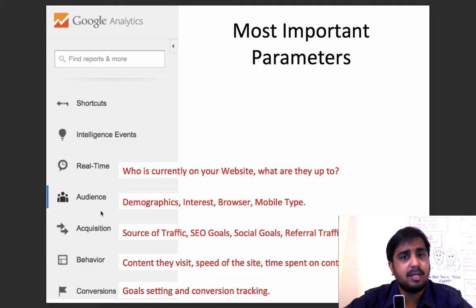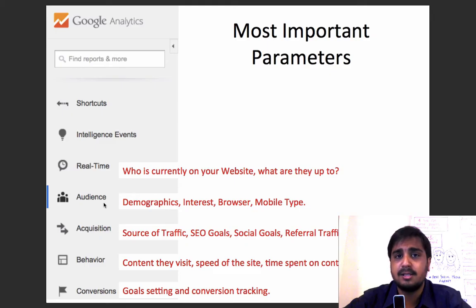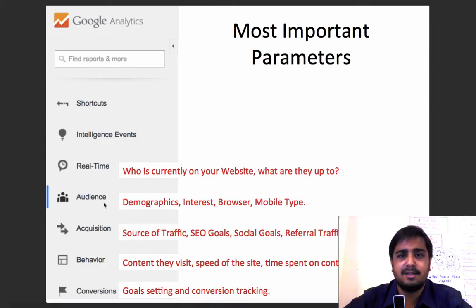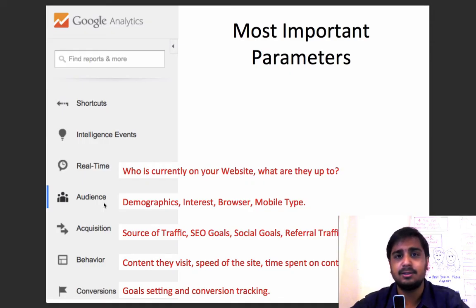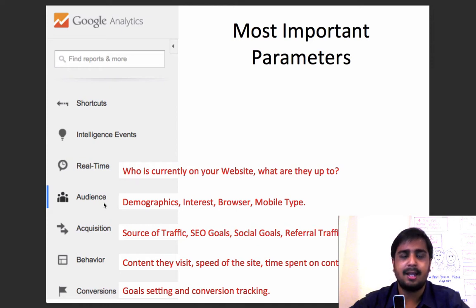The second parameter is the audience parameter, where you can discover the demographics of the audience, the interests of the audience, the browsers they use, and the mobile phones they use. You get a fair understanding of who your audience is and what their behaviors are on your website. Acquisition is about where your visitors are coming from — Google, direct, social networking sites, or different forums — so you understand how you acquire visitors and where they come from.